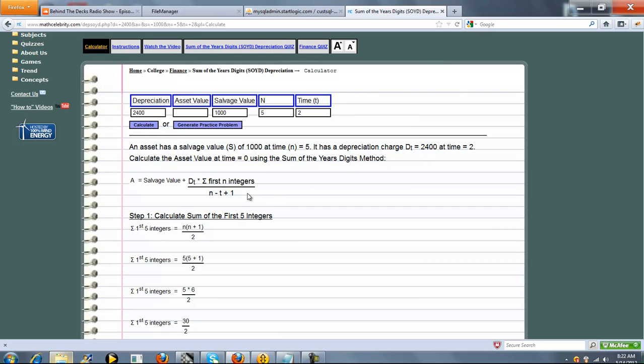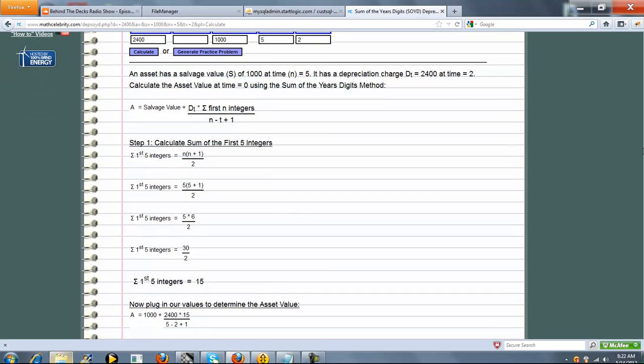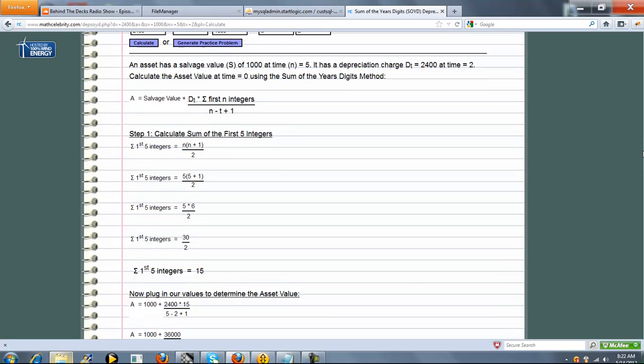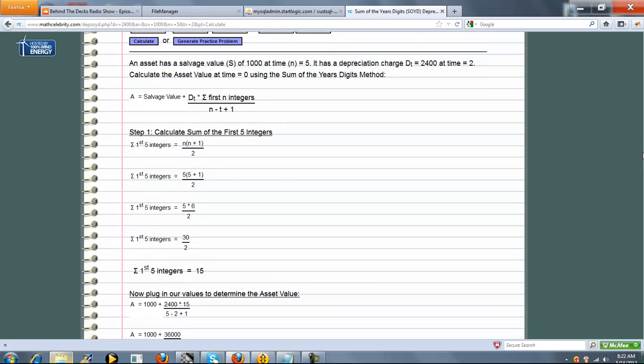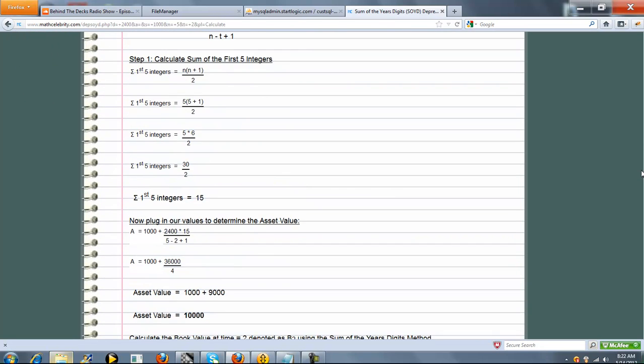Here's the formula rearranged to solve for A. We go ahead and do that for you right away. Again, we calculate the first 5 integer sum, and then we plug in our values. We evaluate, simplify, and we do get 10,000, which is great. That's what we wanted.